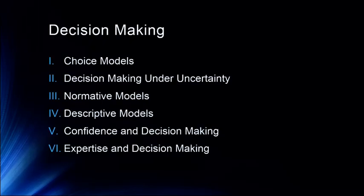So overall, here's what we're going to talk about over the next two lectures. For this current lecture we're going to talk about the first three topics: choice models, decision-making under uncertainty, and normative models. Then we will look at how people actually make decisions under uncertainty with some descriptive models and finish out with some other topics.